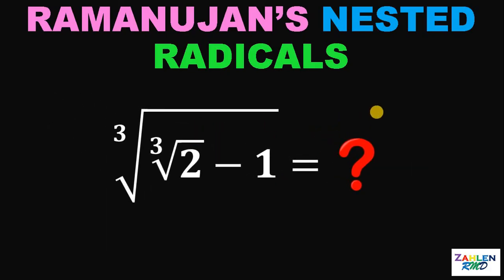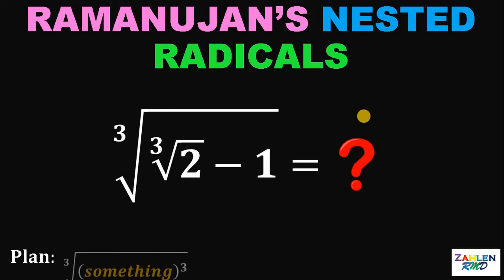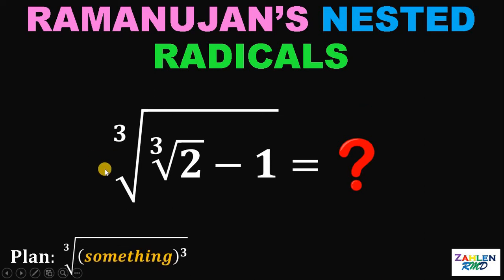Let's start our solution. To answer this question, first thing to do is we need to have a plan. Here's our plan: if we have cube root of something raised to the power of 3, then the cube root and the cube cancel out. In that way, we can say that we have already denested the radical expression.